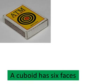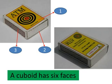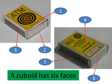A cuboid has six faces. Let us count the faces: one, two, three. Children, we cannot see all the faces from the front, and so the other matchbox is the back view of faces four, five, and six.